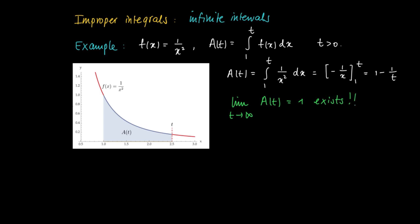1 minus 1 over t has 1 as a limit. So this one exists.